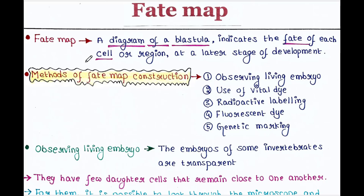Fate map is a diagram of a blastula. It indicates the fate of each cell or region at a later stage of development. There are different methods of fate map construction.